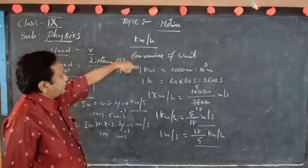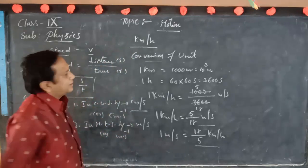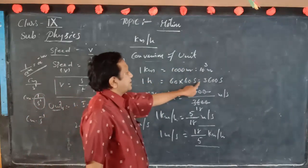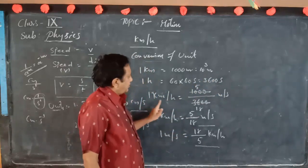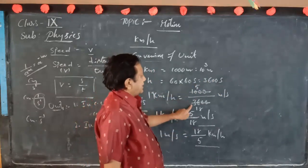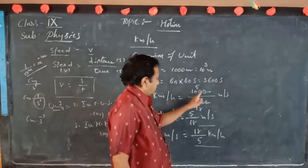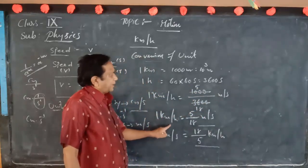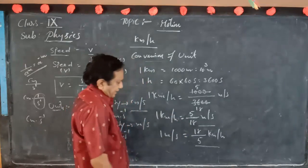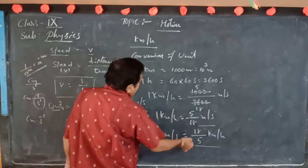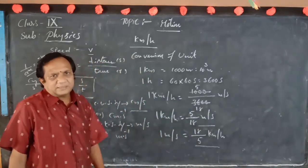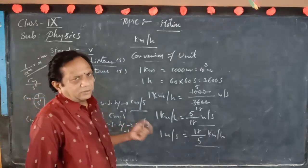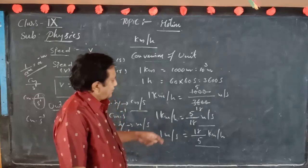The conversion of units: one kilometre equals 1000 metres, and one hour equals 3600 seconds. So one kilometre per hour equals 1000 by 3600 metres per second; cancelling two zeros gives 5 by 18 metres per second. Similarly, the reverse: one metre per second equals 18 by 5 kilometres per hour. You multiply the given number by these factors for conversion.